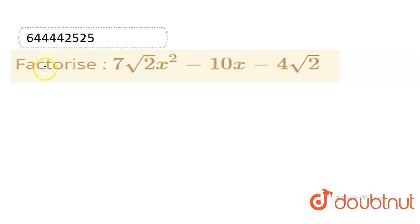Hello everyone, welcome to Doubtnut. The question is: factorise 7√2x² - 10x - 4√2. So the question is 7√2x² - 10x - 4√2 = 0. We have to find the root of the quadratic equation by factorization method.